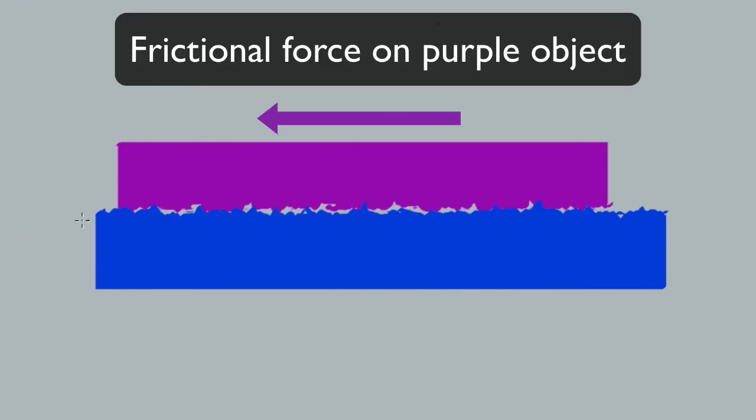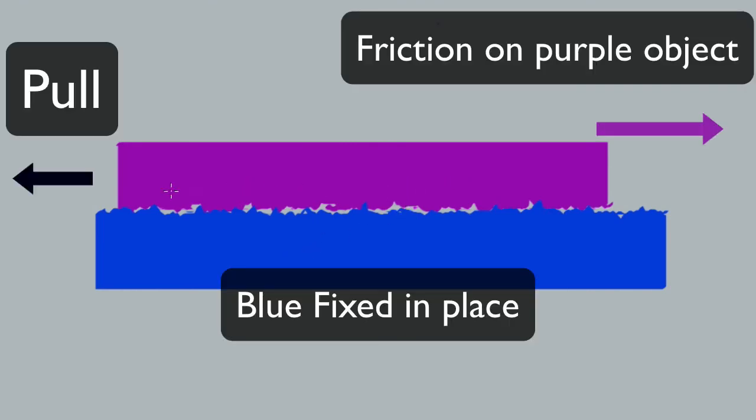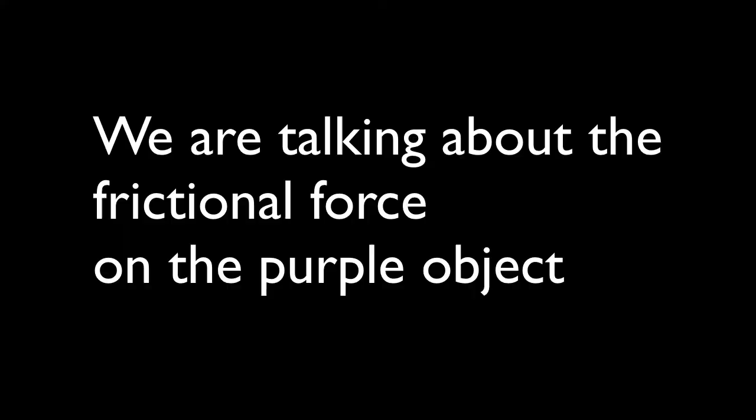Once again, if I move the blue object to the left, you can see that it will drag the purple object alongside with it. So the force of friction will be to the left if I move the blue object to the left. On the other hand, if I keep the blue object fixed and drag the purple object to the left, then the hills and valleys will resist that and there will be a force of friction opposing the motion. So sometimes the force of friction will cause the motion — be in the same direction as the motion — and sometimes it will be opposite to the motion.